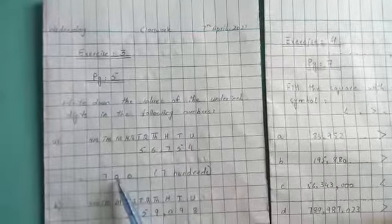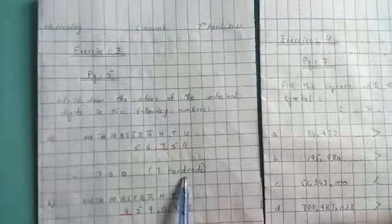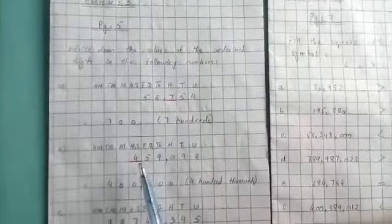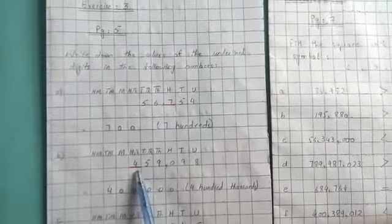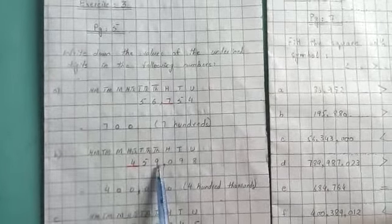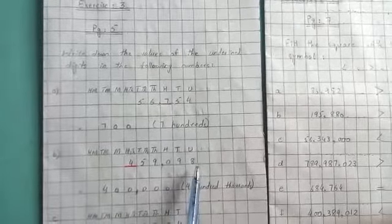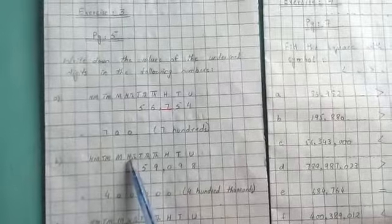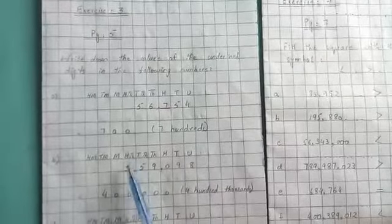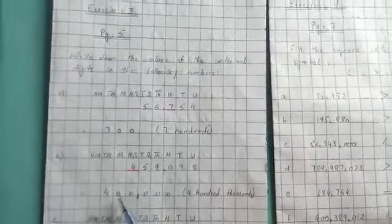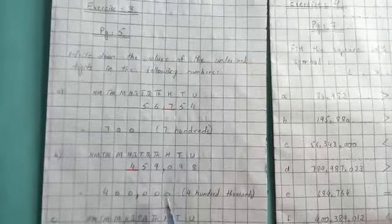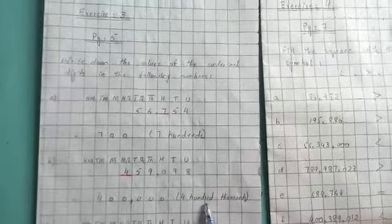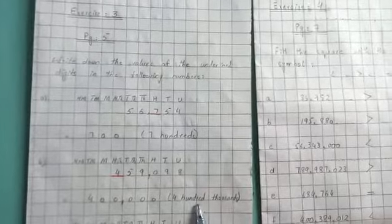The next part is 459,098. Here the underlined digit is 4 and its place value is 400,000. Write 400,000 and also write it in words: four hundred thousand. The next exercise...